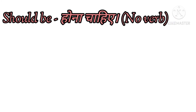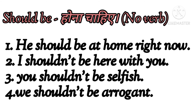As I have already told you, we use 'should be' in the sense of hoona chahiye, but we do not use any verb alongside. Examples: he should be at home right now — usse ghar hoona chahiye abhi. I shouldn't be here with you — mujhe yaha nahi hoona chahiye aapke saat. You shouldn't be selfish — aapko selfish nahi hoona chahiye. We shouldn't be arrogant — hameh arrogant nahi hoona chahiye.